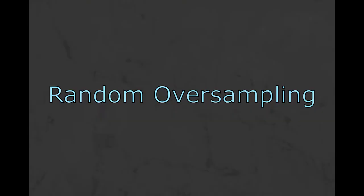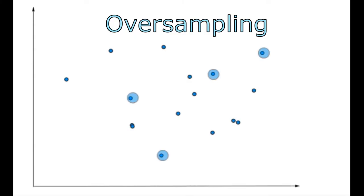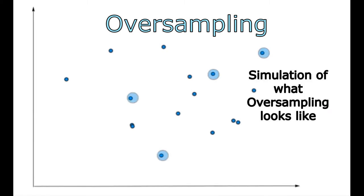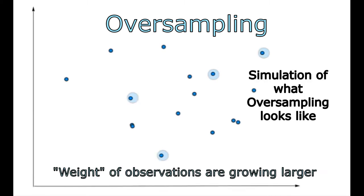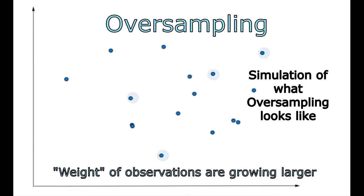This is where sampling methods come into play when addressing imbalanced datasets. Random oversampling involves randomly selecting from the minority class and simply duplicating each observation. Note that this decreases the variance of the dataset, which can result in overfitting. It's a relatively naive approach to sampling but is easy to communicate to a client.